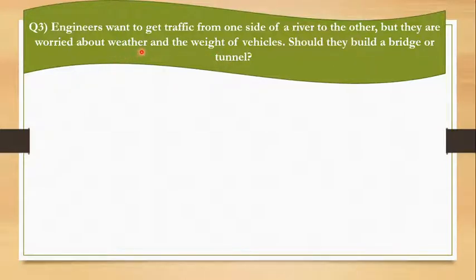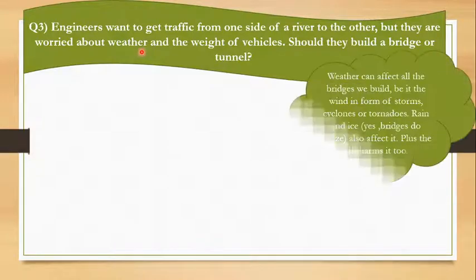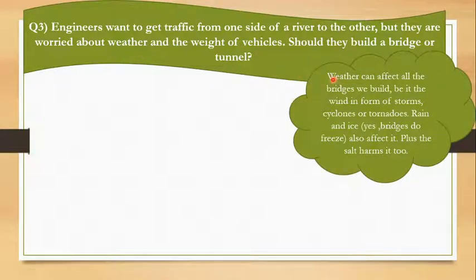First we have to see how weather can affect a bridge or tunnel. Weather can affect all the bridges we build, be it the wind in the forms of storms, cyclones, or tornadoes. Rain and ice—bridges do freeze—also affect it, plus the salt harms it too. You must understand this in order to be able to answer the question. When we build a bridge, a cyclone, tornado, or storm can come and affect the strength of the bridge.